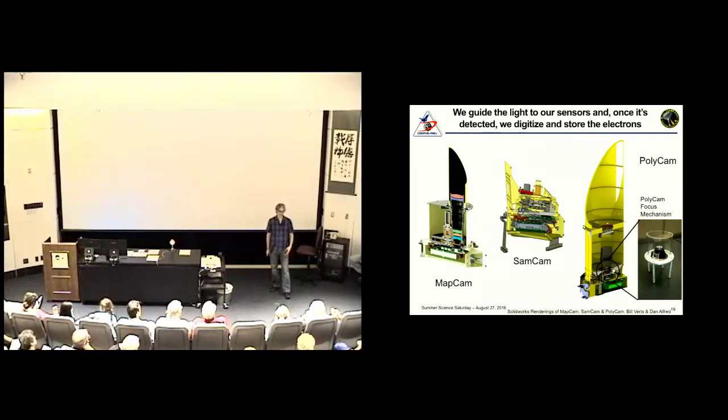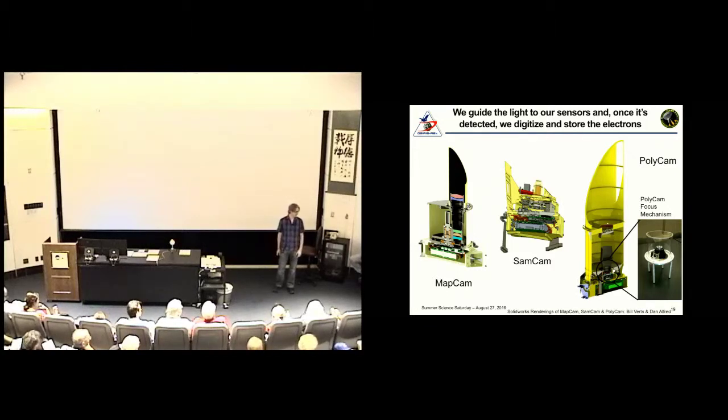Since then, there's been one other object discovered, 2008 EV5, which had we known about it at that time, probably would have been in the running. But it wasn't discovered until later. So it really came down from 700,000 to two. And then we ended up with one. You can see how close we could have had no viable targets for this sort of mission.